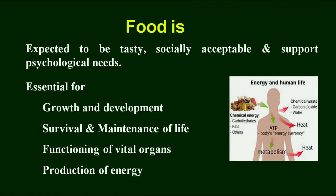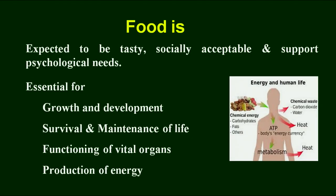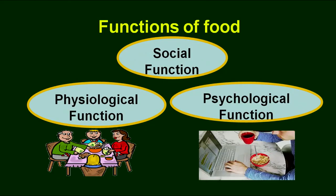When we choose any food, first we see whether this food is tasty or not, whether it is socially acceptable, and whether it also supports the psychological needs — whether I feel happy or I do not like that particular food. When we deeply understand the functions of food, we find that food is essential for growth and development, survival and maintenance of life, functioning of vital organs and production of energy. We have divided the functions of food into three categories: social functions, physiological functions, and psychological functions.